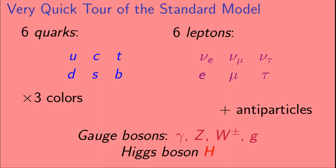In the standard model we have six quarks — the up, down, charm, strange, top, and bottom quarks — and each comes in three colors. We also have six leptons: the electron, the muon (which we're mostly interested in here), and the tau, along with their respective neutrinos. Each of the quarks and leptons has an antiparticle. We also have the gauge bosons: the photon (gamma), the Z boson, the W plus and minus bosons, the gluons, and finally the Higgs boson (H).